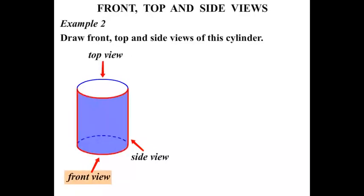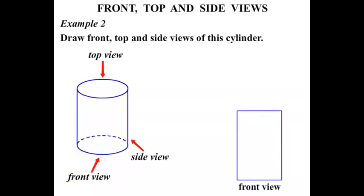Now the front view, let's concentrate on that. I've highlighted that. Now you can see we've drawn the cylinder at an angle. But if you were to look directly in front of that cylinder, put it on a table and look directly at it, you would see the front view in fact is a rectangle. You can't see any sort of curvature there at all.